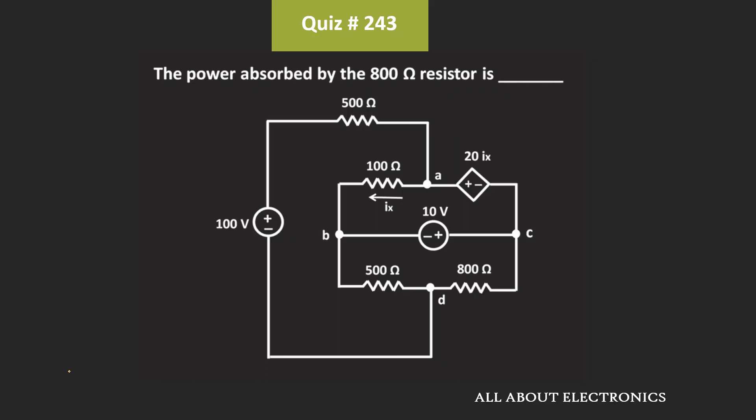Hey friends, welcome to the YouTube channel All About Electronics. So in this question, we have been given the circuit and we have been asked to find the power which is absorbed by this 800 Ohm resistor. Now there are many ways to solve this question, but let me just show you one of the easiest ways by which we can get the answer.